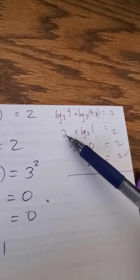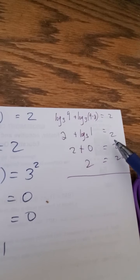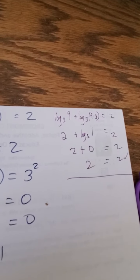Well, that's just the log of 9 base 3 is 2, because 3 to the second power equals 9. This is the log of 1, the log of 1 is always 0, so I get 2 plus 0 equals 2. Check! 2 equals 2. Check!